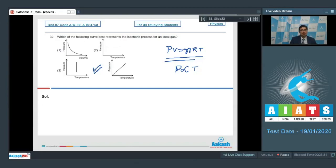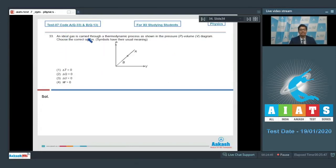Now let us discuss question number 33. Question 33 says an ideal gas is carried through a thermodynamic process as shown in the pressure volume diagram. Choose the correct option. Symbols have their usual meanings. The options are delta T is equal to 0, delta Q is equal to 0, delta U is less than 0, and delta W is greater than 0.